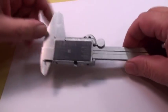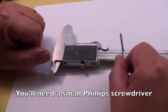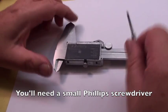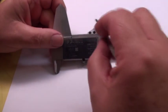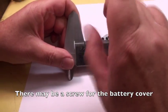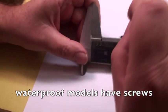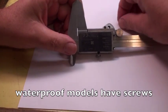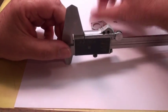Here we go. You'll need a small Phillips screwdriver. Sometimes there's a screw here to hold the battery cover in place. Sometimes there isn't. There we go, unscrewed.